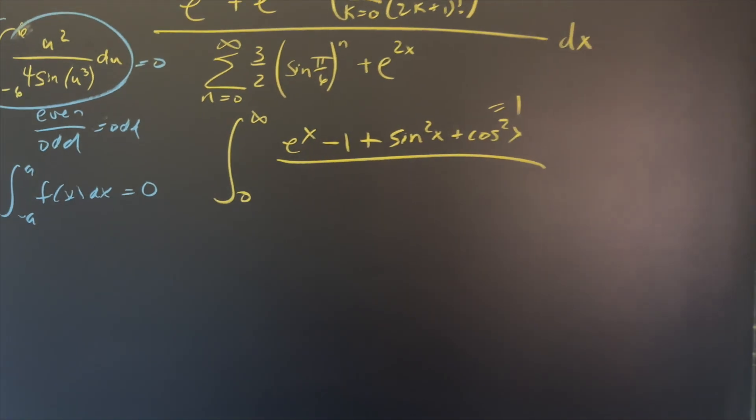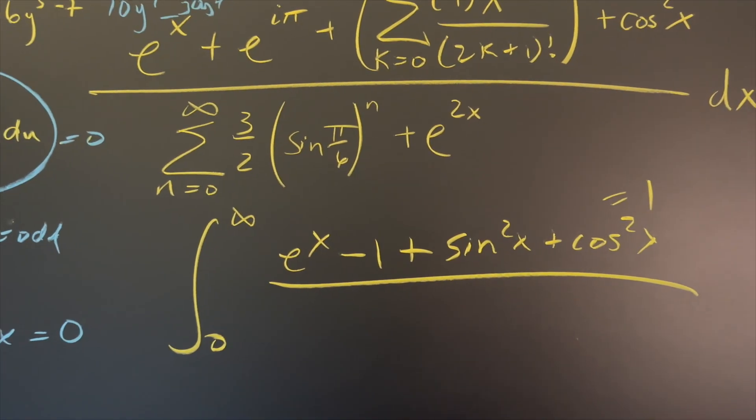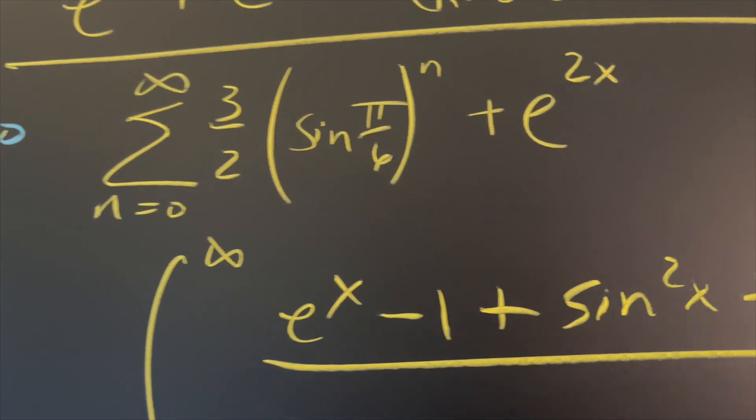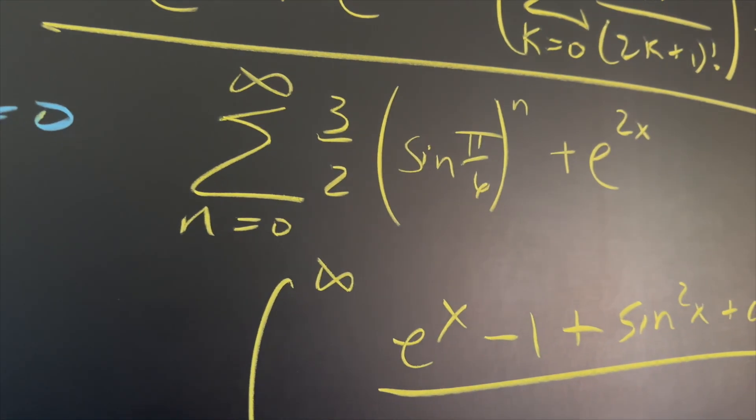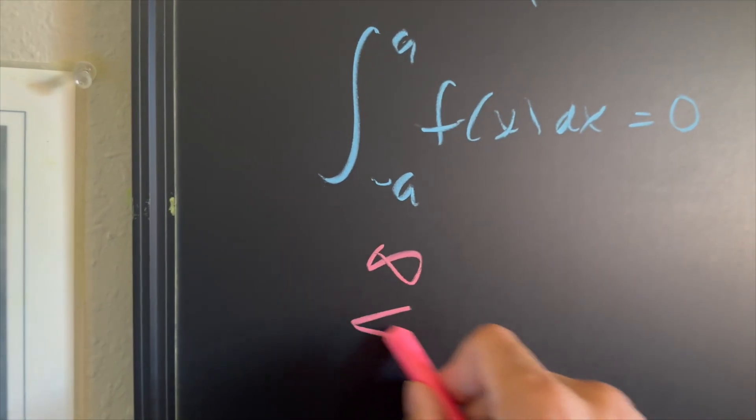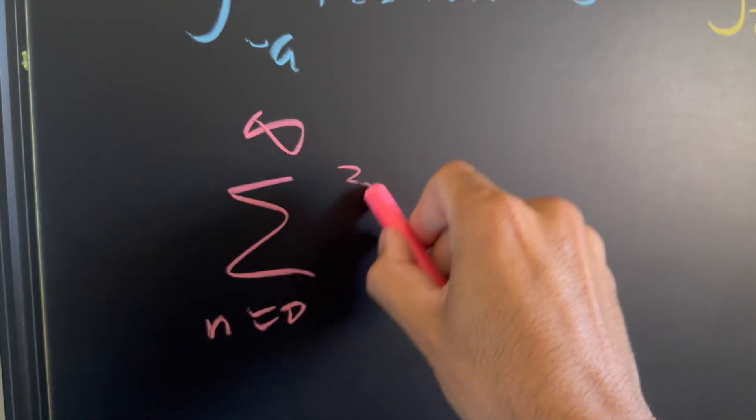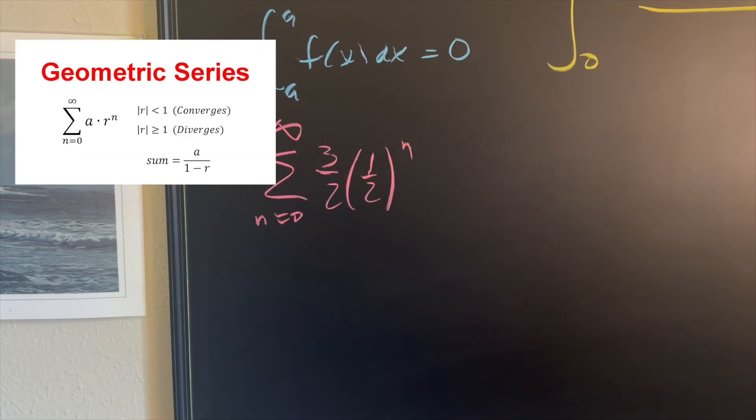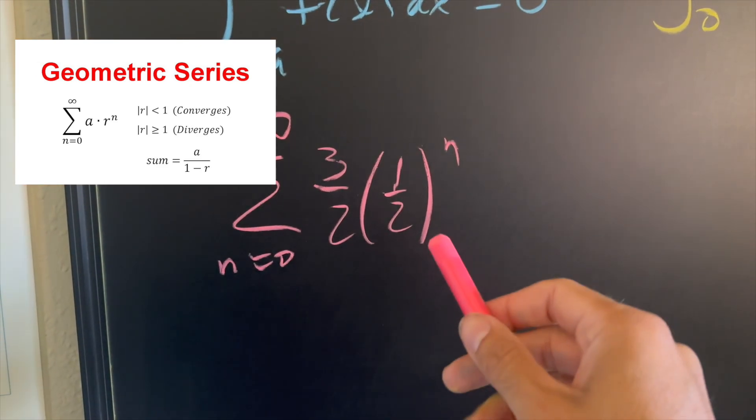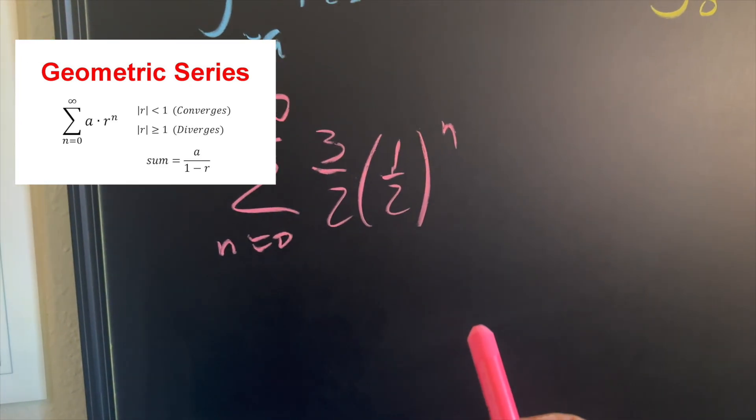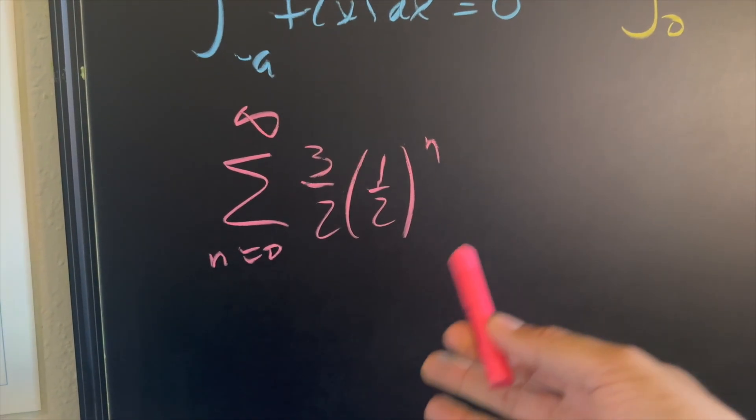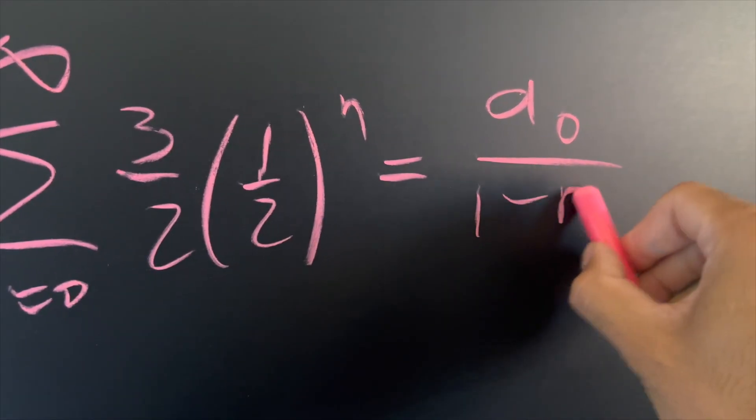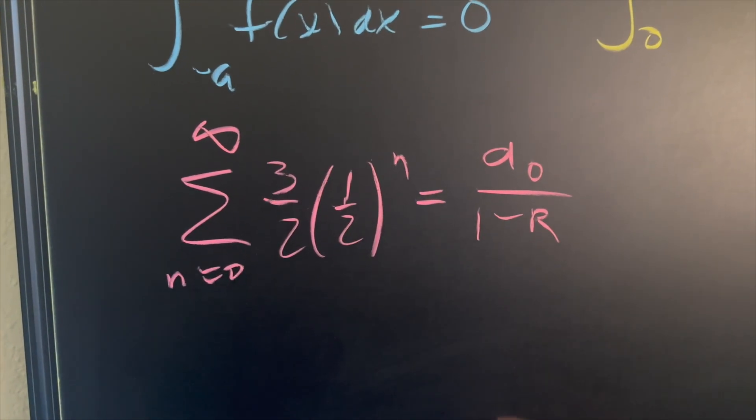So let's worry about the bottom. On the bottom, we have this geometric series. You have three halves and then you have sine of pi over six. So let's go ahead and just start simplifying that now. Well, sine of pi over six, if you know your unit circle, it's just one half. So we have the summation from zero to infinity of, we have three halves and then we have one half to the power of n. Now remember the geometric series will converge as long as the common ratio or the absolute value of the common ratio is less than one. And in this case it is, it's just one half. So what we're going to use is we're going to use this formula right here where a of zero is the first term over one minus the common ratio.